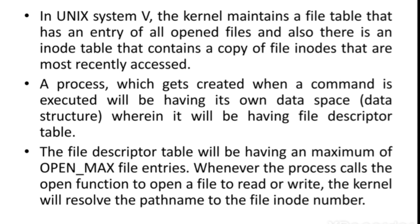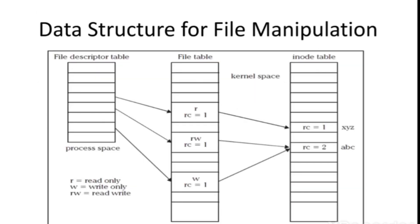Whenever the process calls the open function to read or write a file, the kernel will resolve the path name to the file's inode number. The file descriptor will be converted into the inode number because if you want to find any particular file, the kernel needs an inode number. The file descriptor is in process space and won't be understood by the kernel, so it must be converted to inode format so the kernel can access the file.